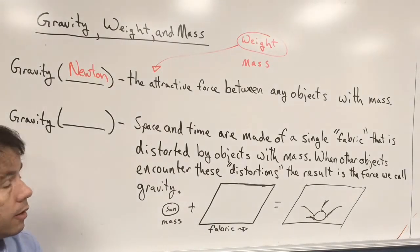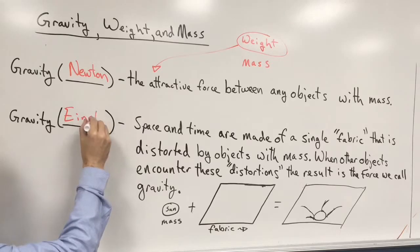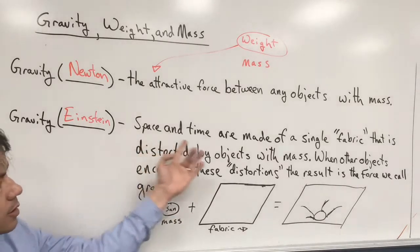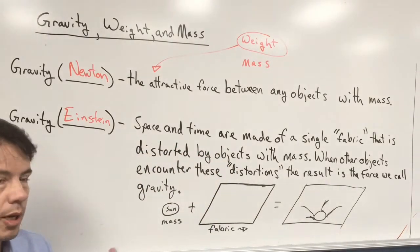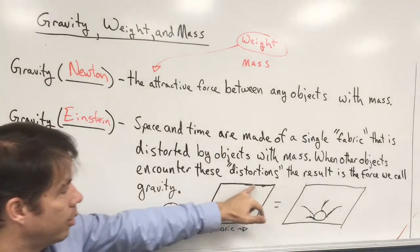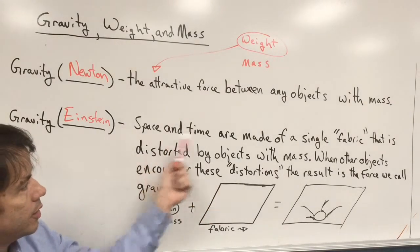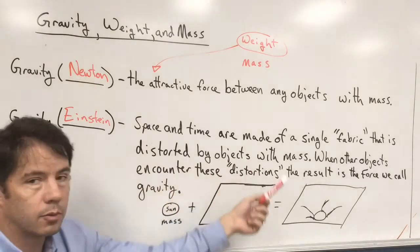Well, a couple centuries later, Einstein comes along and tells us a little bit better what gravity is. What he said was space and time are made out of a single fabric. So if we imagine space and time, all of existence is like a blanket.